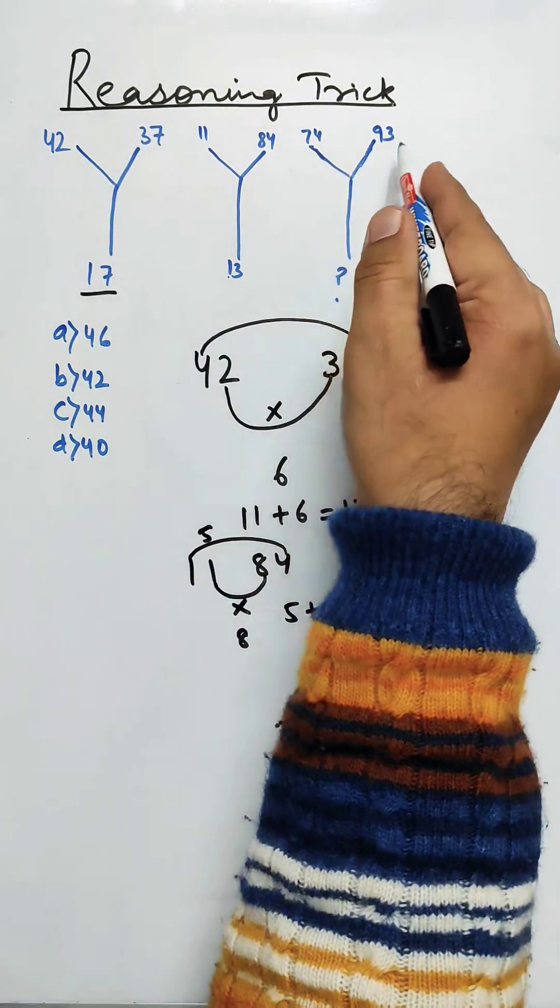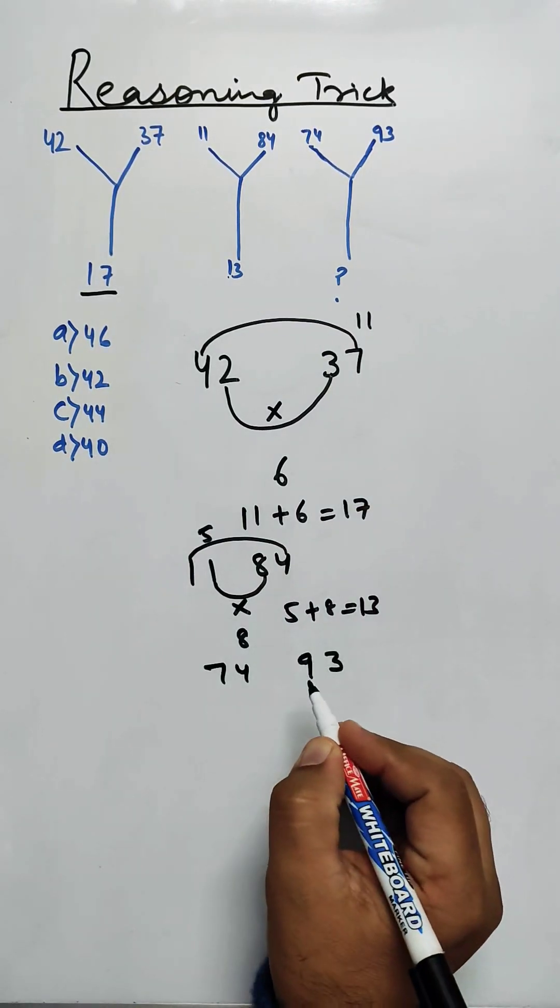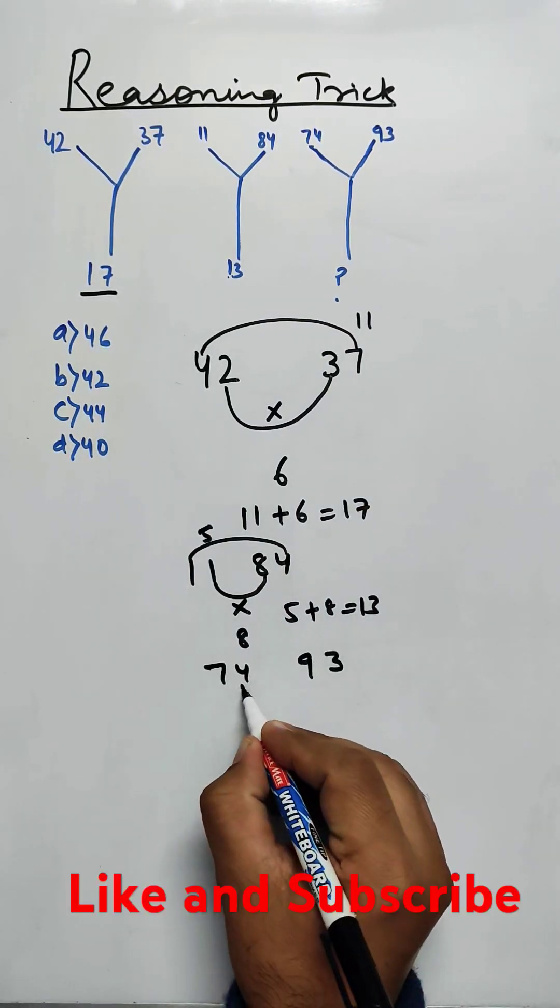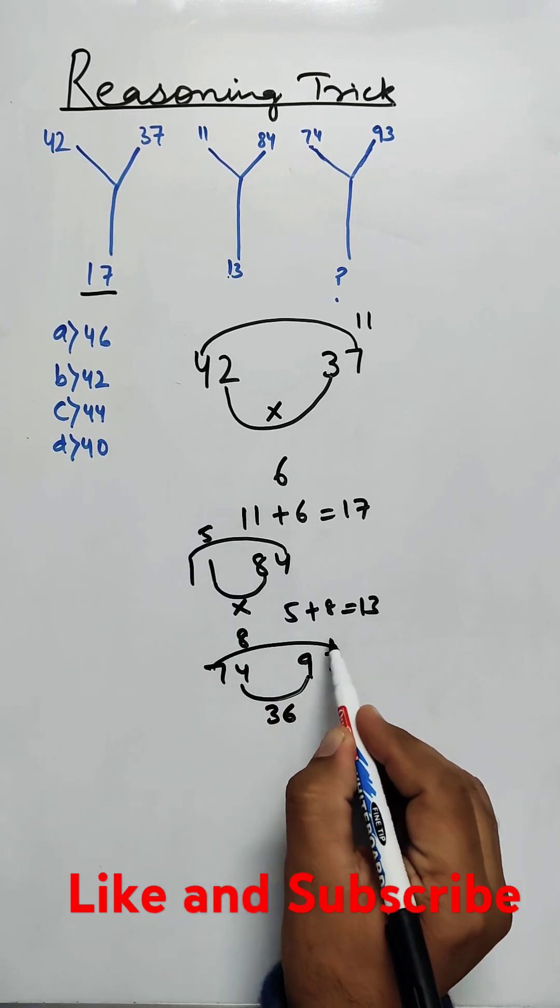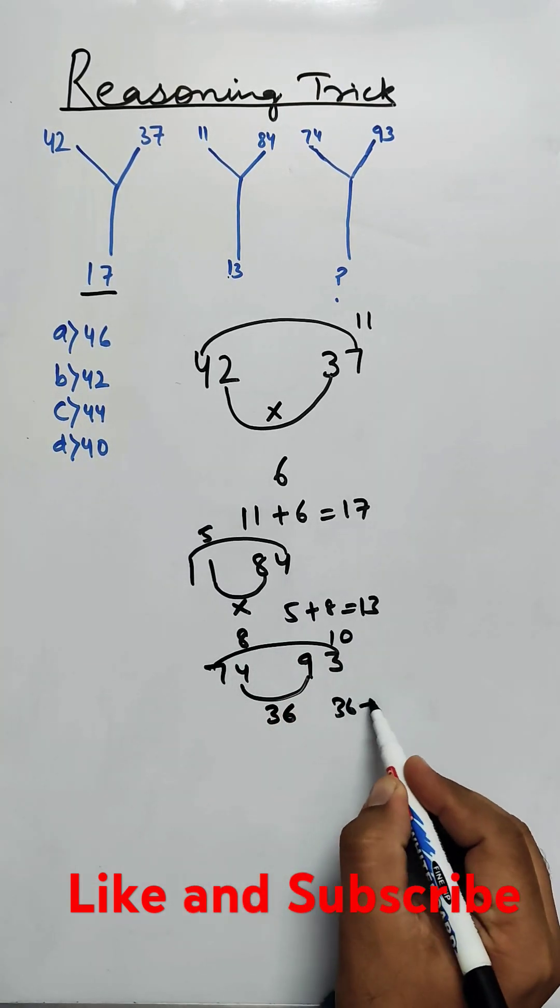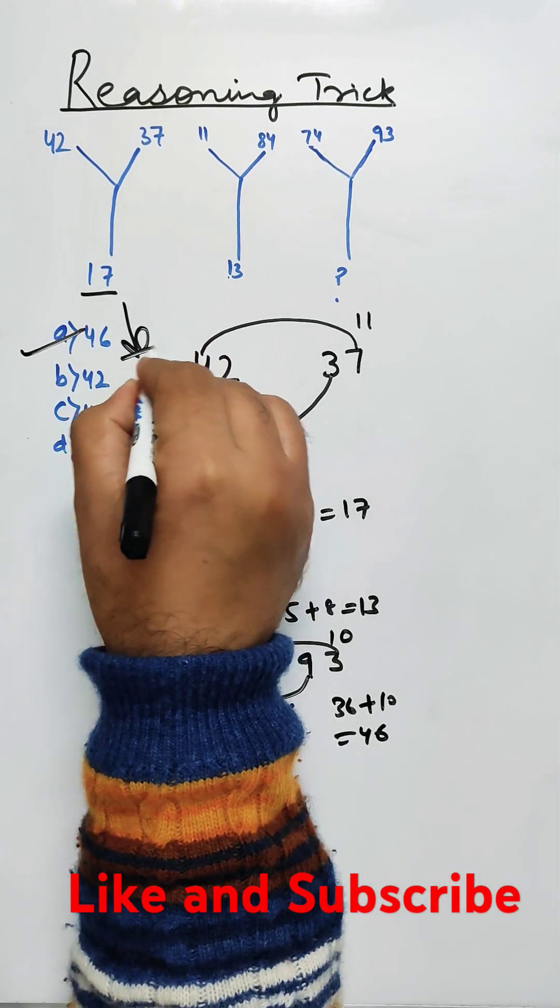In the similar way, we will try with 74 and 93. We have 74 and 93. If we multiply the inner term, we get 36. And if we add the outer term, we get 10. So 36 plus 10 is equal to 46. So option A will be the correct answer.